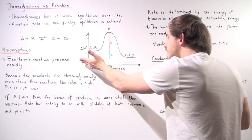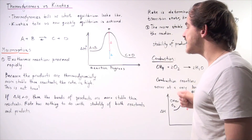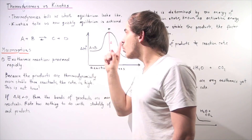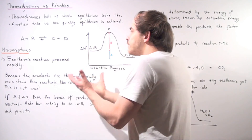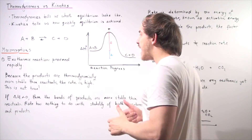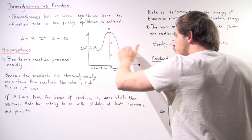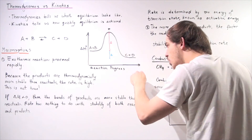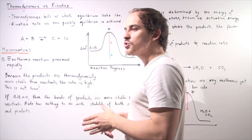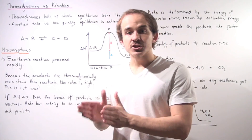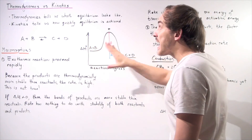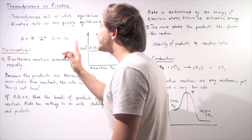Let's look at the following diagram. Our x-axis is reaction progress, while our y-axis is the change in enthalpy. Change in enthalpy is simply the difference in the energy of our products — the energy of the bonds in the products — and the energy of the bonds in our reactants. Notice that in this reaction, the energy of the products C and D is lower than the energy of A and B, giving us a negative delta H, which means we have an exothermic reaction. Our bonds are more stable in the product than the reactant — and that is thermodynamics.